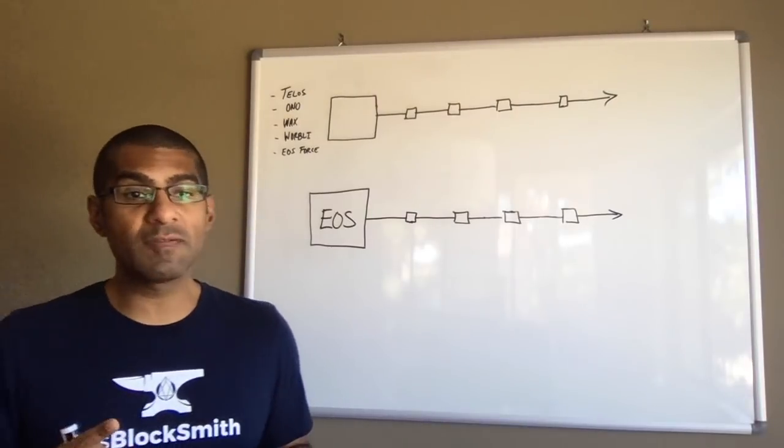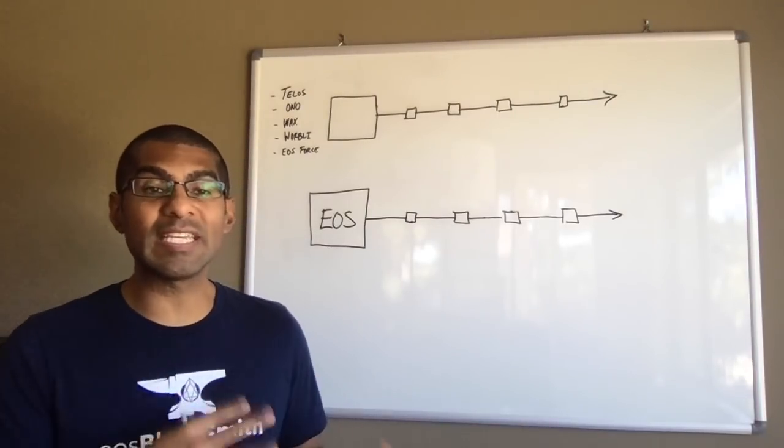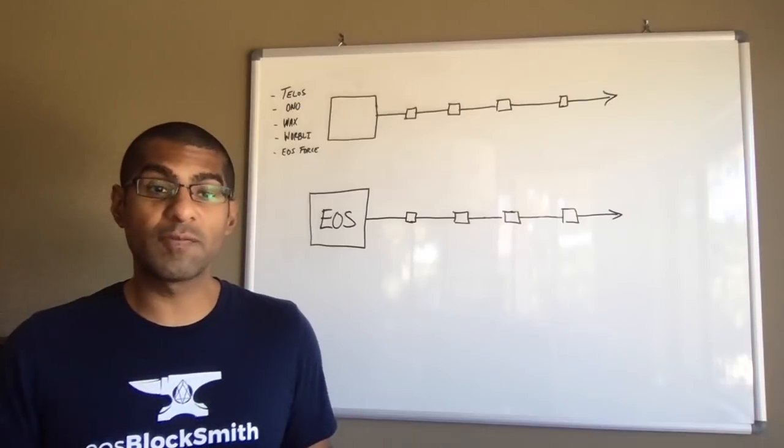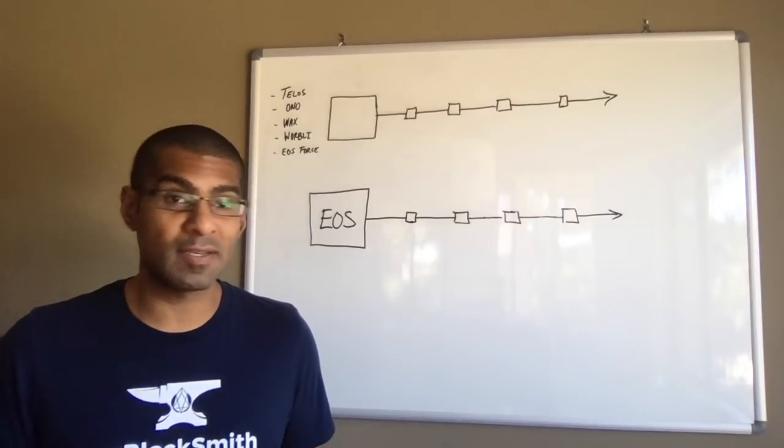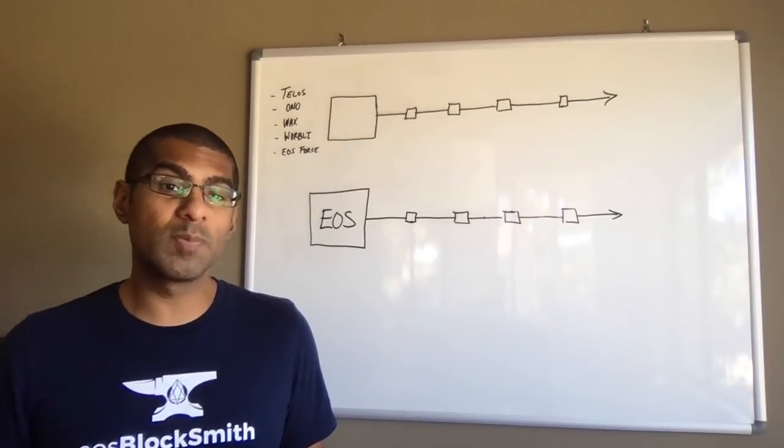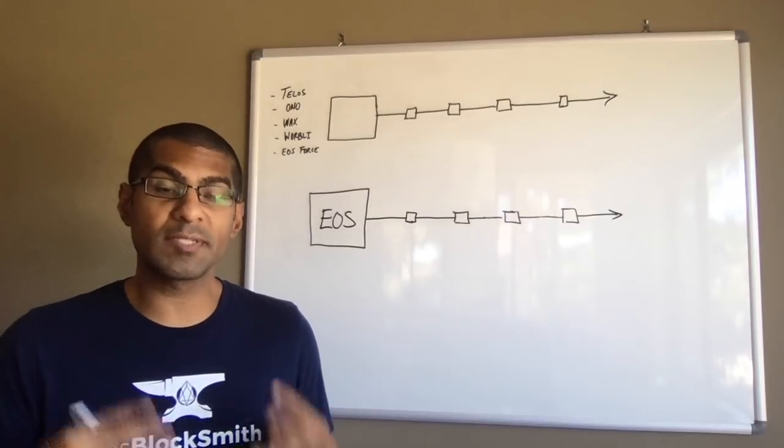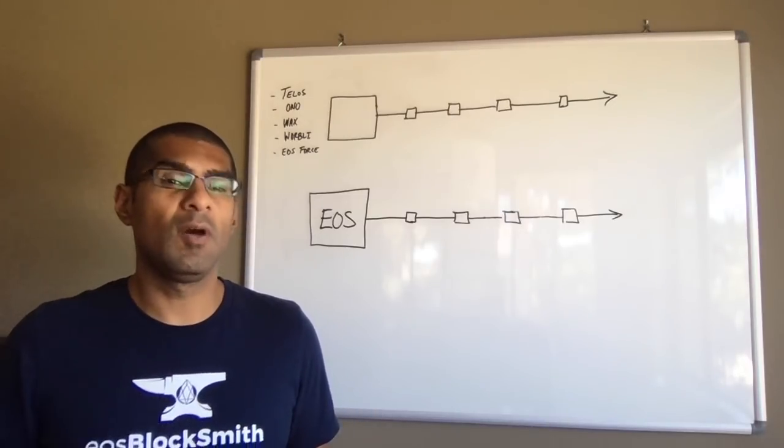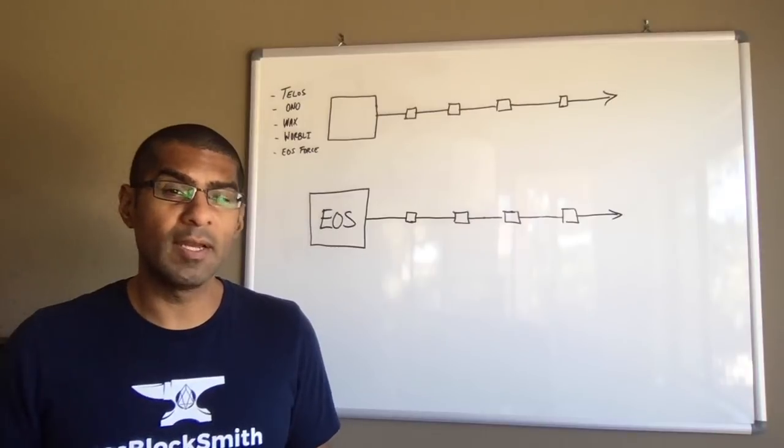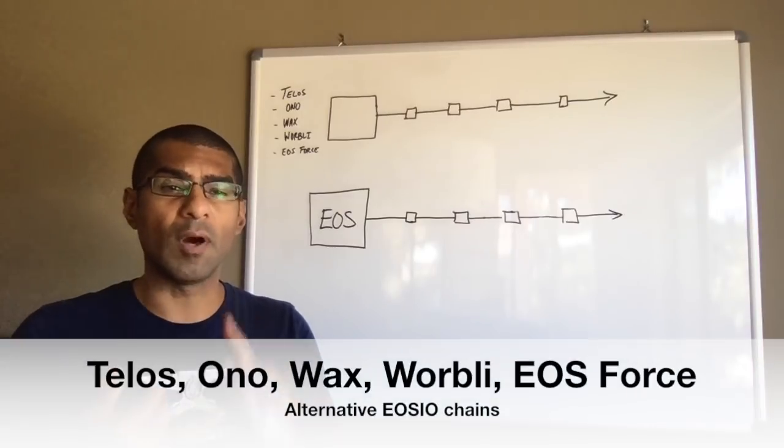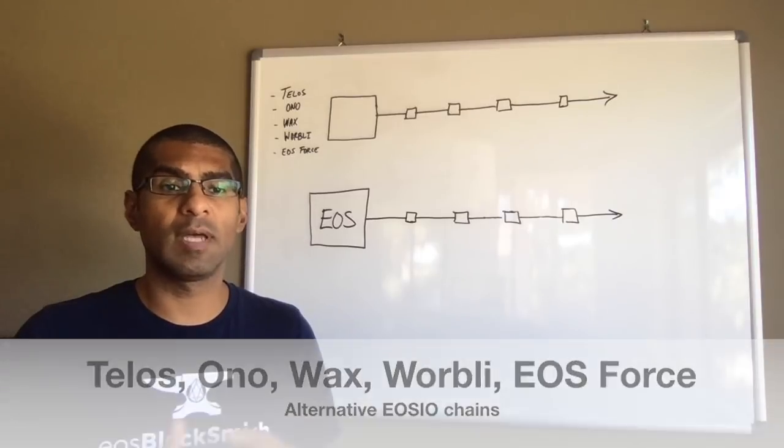Now, in contrast to chain forks, which haven't really happened yet on the EOS network, code forks are appearing imminent. We've already had several groups announce that they're going to use the EOS.io software to launch their own chains. Ones that you've probably heard of already might include Telos, the Ono network, the Wax network, the Warbly network, and EOS Force.